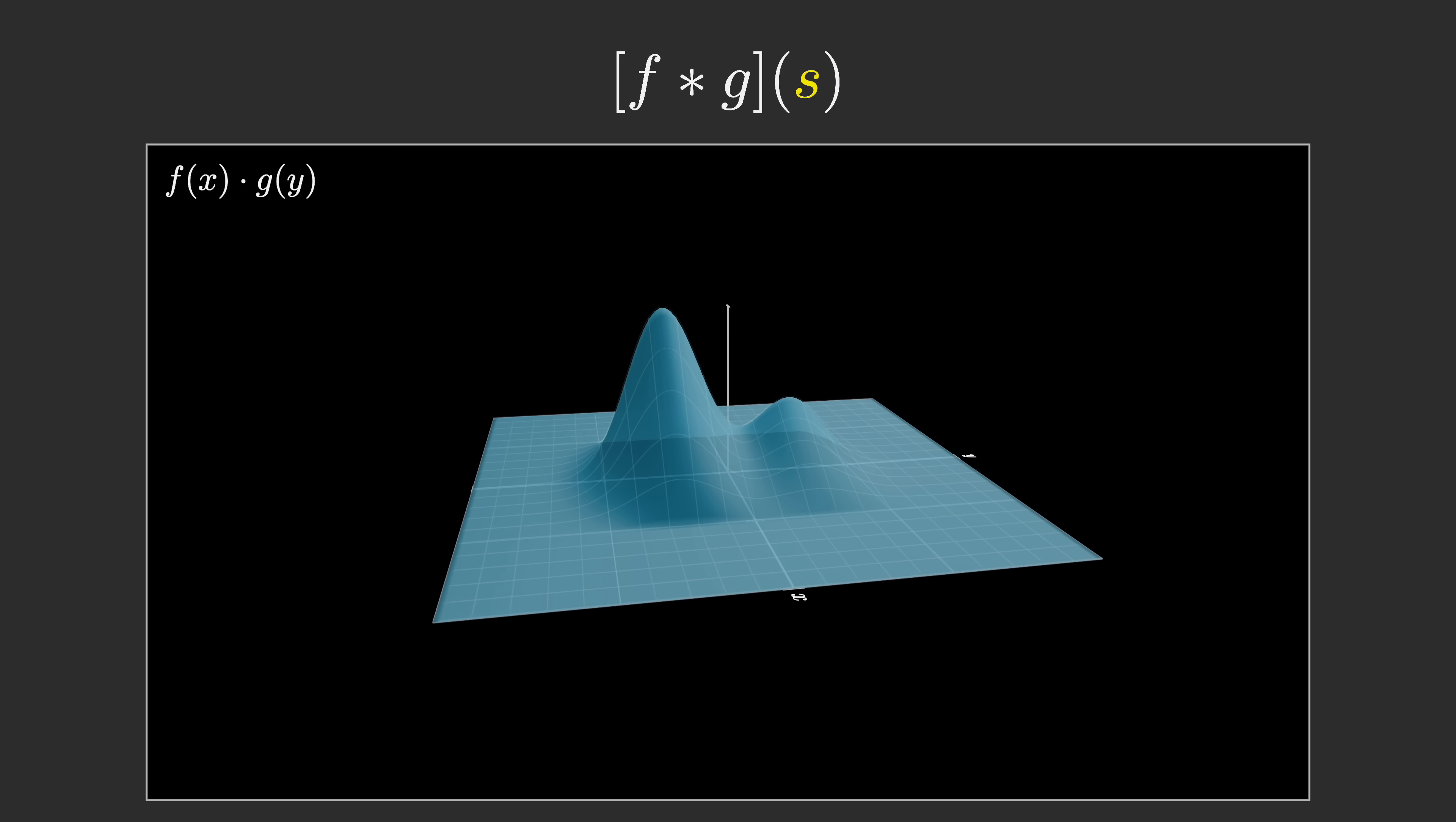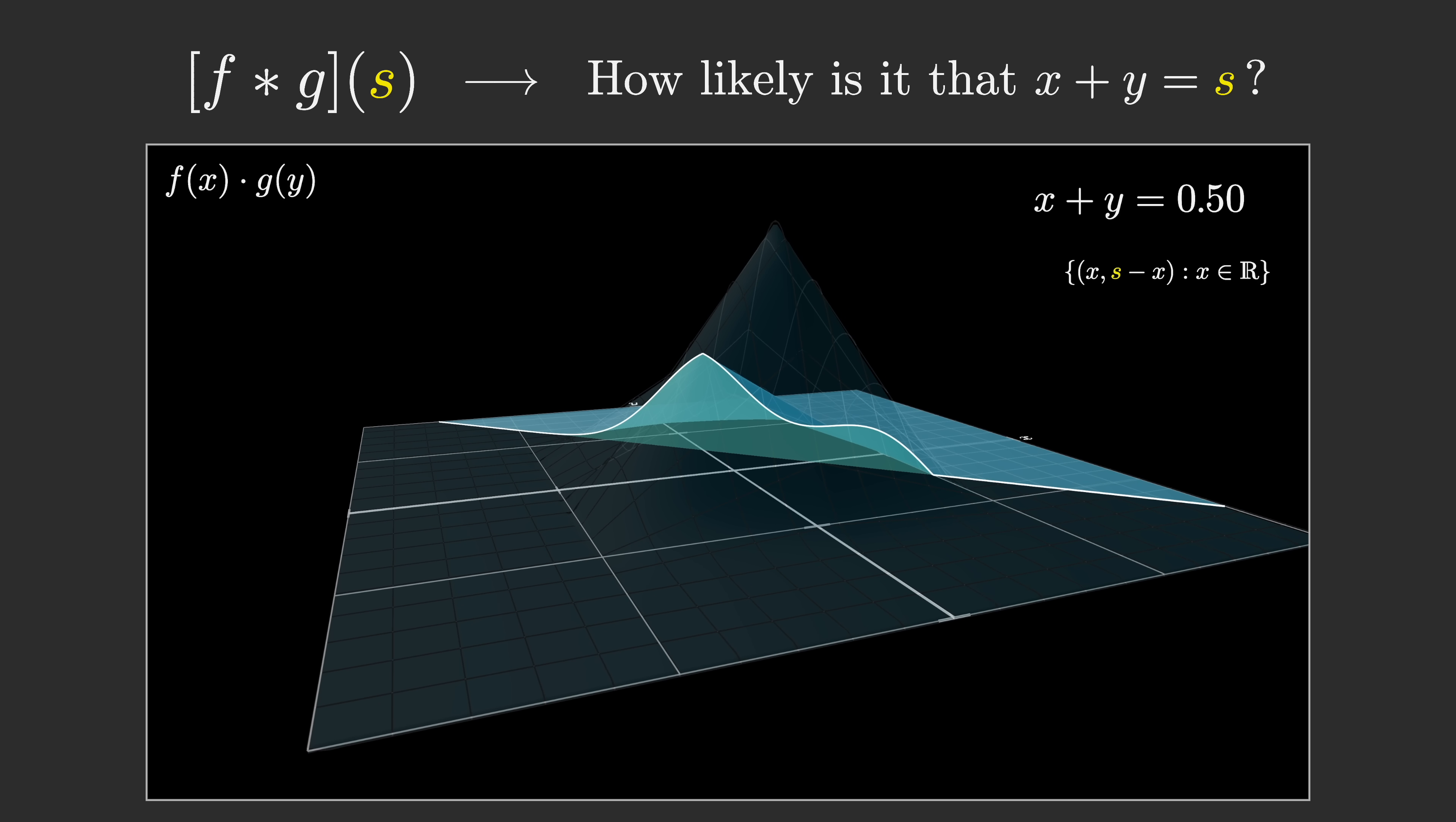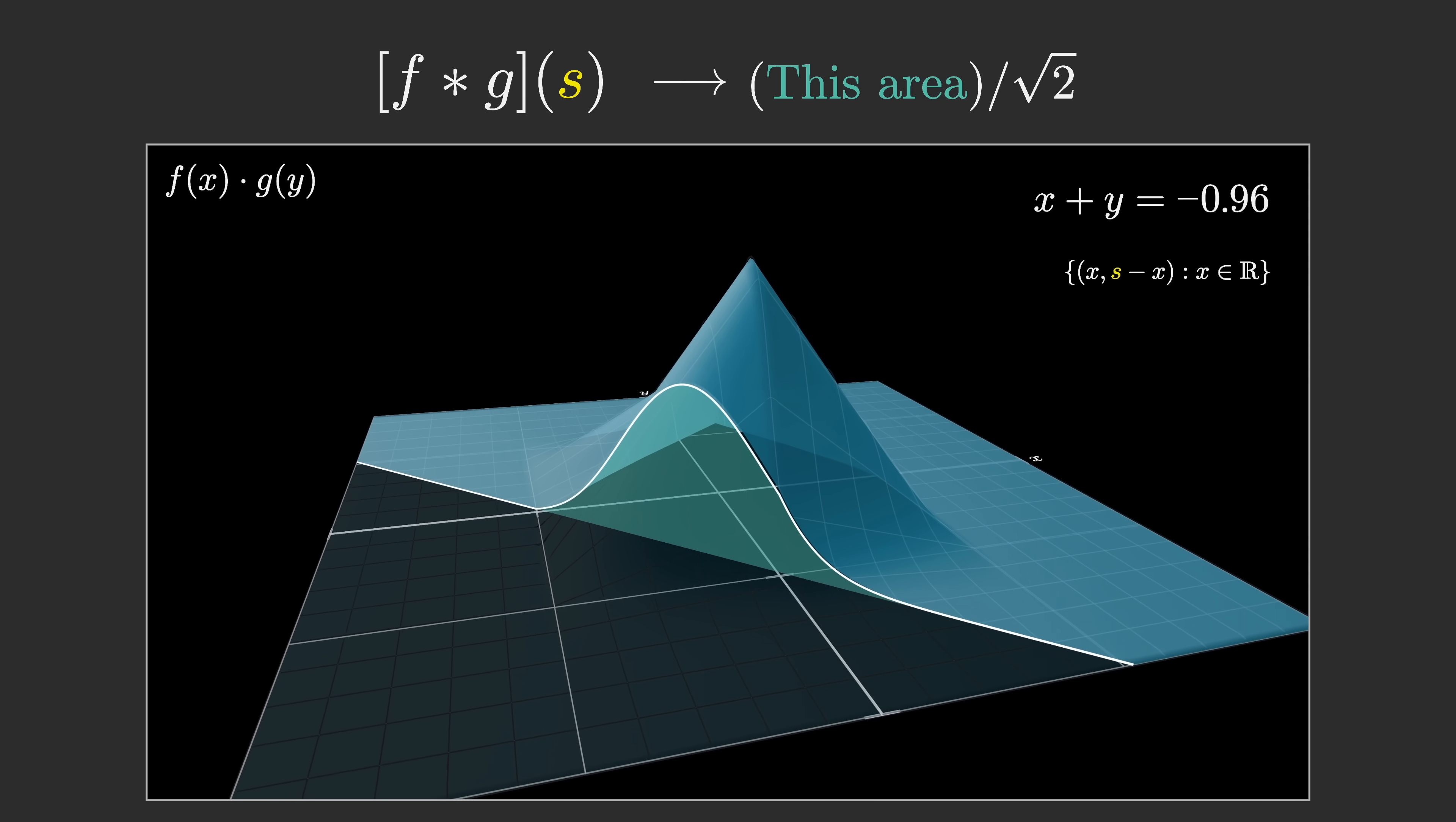To interpret the convolution of f and g evaluated on some input s, which is a way of saying how likely are you to get a pair of samples that adds up to this sum s, what you do is you look at a slice of this graph over the line x plus y equals s, and you consider the area under that slice. This area is almost, but not quite, the value of the convolution at s. For a mildly technical reason, you need to divide by the square root of two. Still, this area is the key feature to focus on. You can think of it as a way to combine together all the probability densities for all of the outcomes corresponding to a given sum.